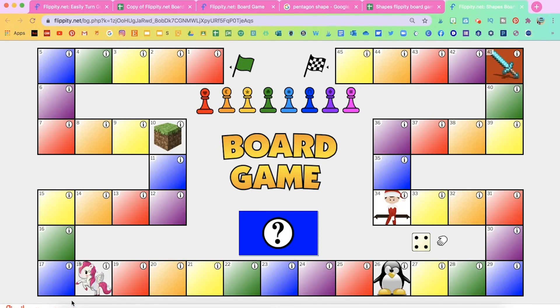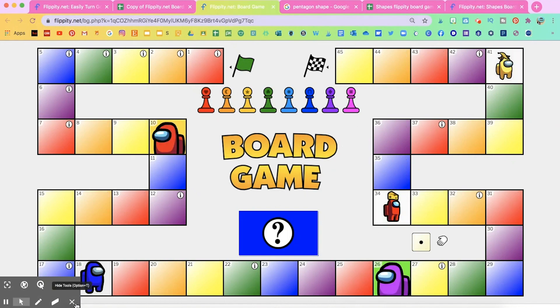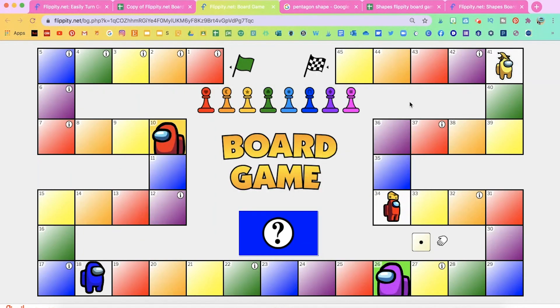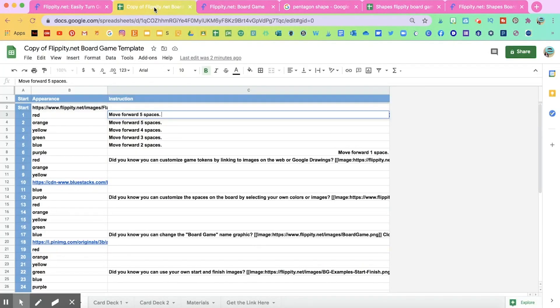Once you're done editing the appearance of your board game and you have it the way you want it to look, we're going to edit what you want each box to say whenever you click on that number. So you're going to go to your spreadsheet. And I'm going to start with number one. And here you can add move forward five spaces or move back.